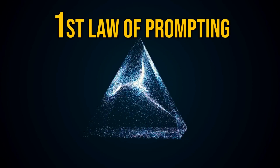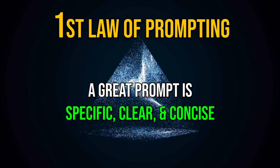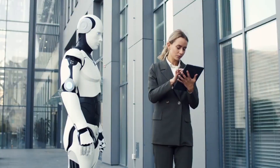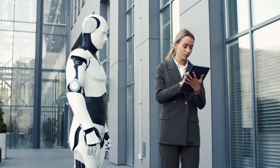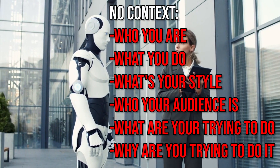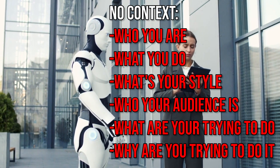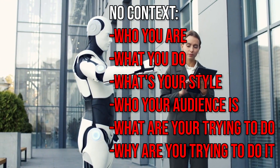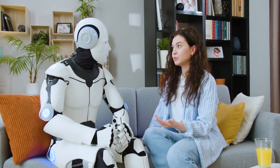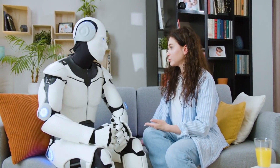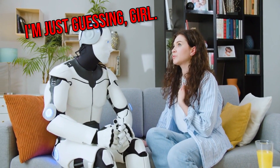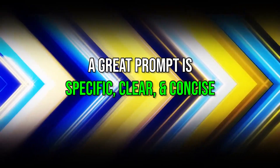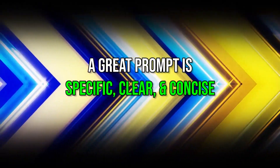The first law of prompting is: a great prompt is specific, clear, and concise. Remember, AI has no context of who you are, what you do, what your style is, who your audience is, what you are trying to do, and why you're trying to do it. AI just has a general average idea of everything — what's more probable and what's less likely to happen. So you need to be specific in your direction.